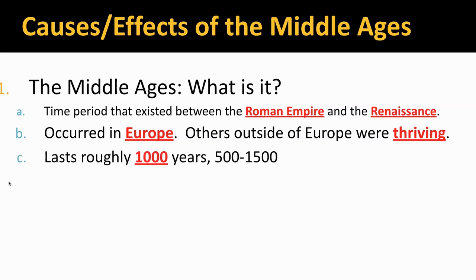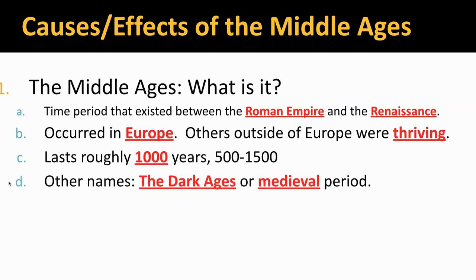The Middle Ages lasts about 1,000 years, roughly 500 to 1,500 A.D. Rome fell in 476, and the Renaissance really starts in 1300 in Italy, but by the time it reaches all of Europe, you're looking at about 1500. Some other names for this time period: you often hear it called the Dark Ages — we're going to see some clips from a History Channel series called the Dark Ages. Sometimes it's known as the Medieval Period. If you hear about Medieval Knights or Medieval Times, it's the same thing.